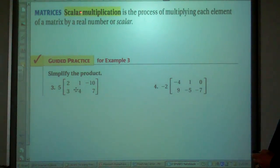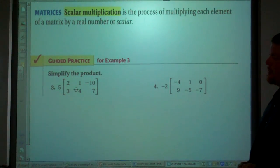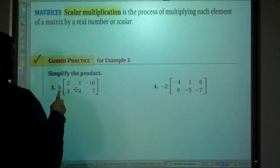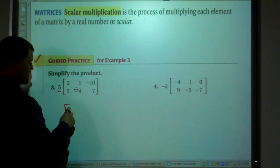Now, scalar multiplication. Scalar multiplication is the process of multiplying each element in a matrix. 2, 3, 1, negative 4, negative 10, 7, negative 4. Those are all the elements in the matrix. We've got this number outside the matrix, 5 here. We are multiplying by 5. That means you literally multiply every single term in that matrix by 5.